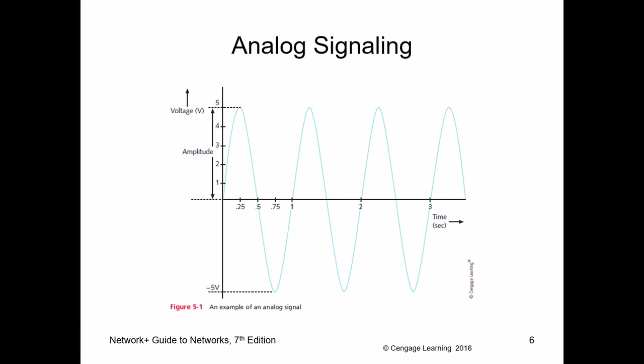If you're transmitting wirelessly, the antenna will radiate a signal outward. You can think of it like taking a stick and hitting a puddle of water — you get waves coming out. That's how a wireless antenna radiates the signal omnidirectionally, in all directions.